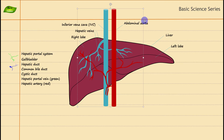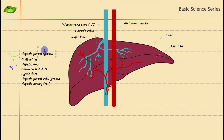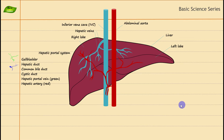An additional system is the hepatic portal system. It is a venous system whose role is to return blood from the digestive tract to the liver, where the liver will detoxify or process it, and then that blood is transferred to the heart. That's your hepatic portal system, and I'll be designing the hepatic portal vein shortly.